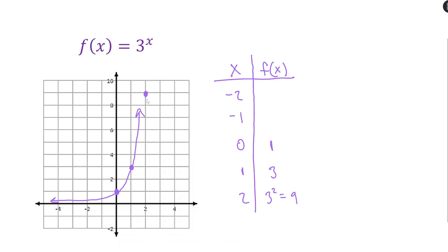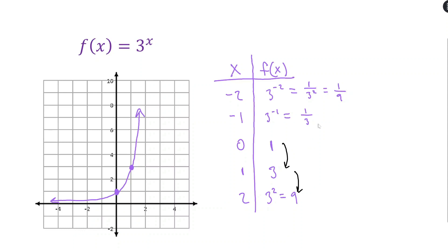For extra accuracy, plug in x = 2: 3 squared = 9, giving the point (2, 9). For the negative exponent values: 3 to the negative 1 = 1/3, and 3 to the negative 2 = 1/9. You could also use the multiplicative relationship — each y value is multiplied by 3 going right, so going left means dividing by 3: 1 ÷ 3 = 1/3, then 1/3 ÷ 3 = 1/9. The denominators are powers of 3.